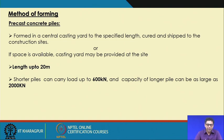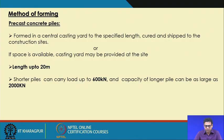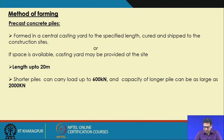If space is available on site, the casting yard may be provided at the site. The pile length can go up to 20 meters, and shorter piles can take up to 600 kilo Newton load capacity.